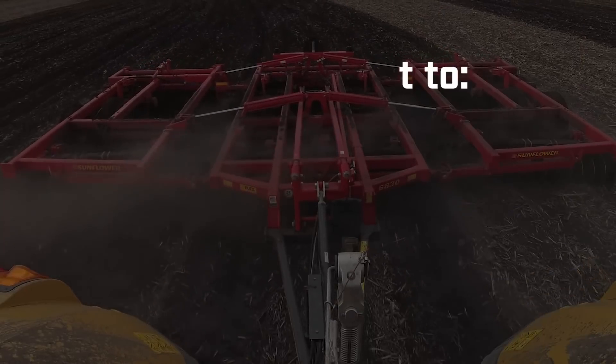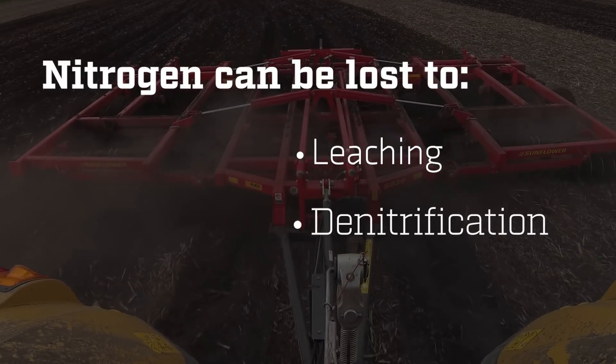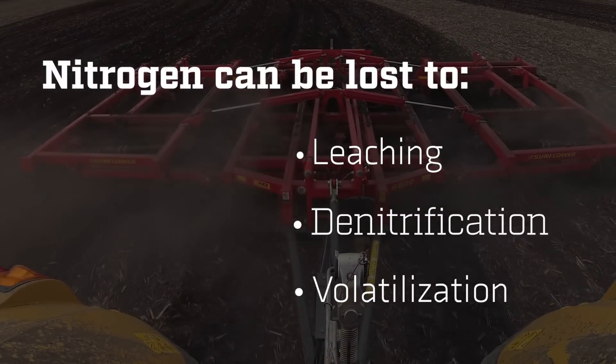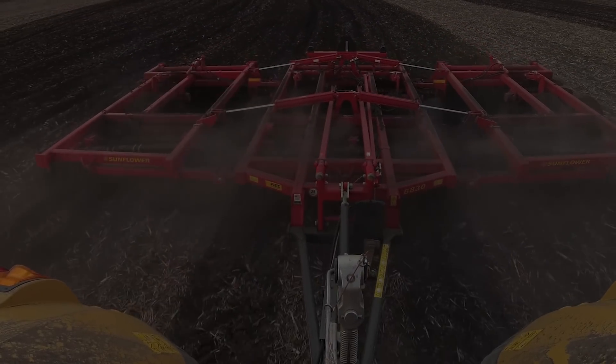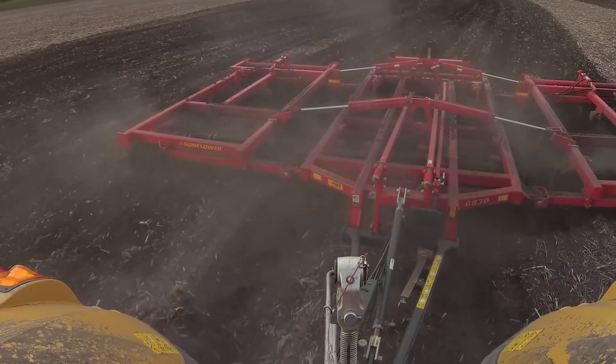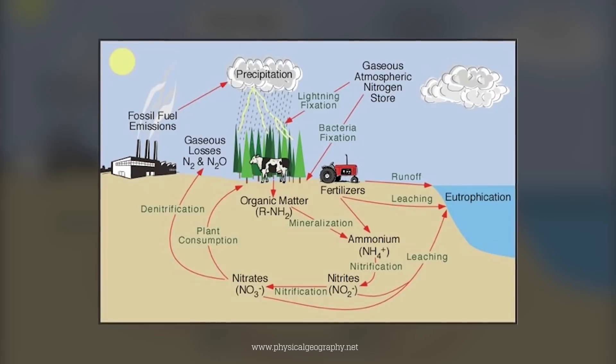Fall application of nitrogen, although it's somewhat simple, isn't always our best answer. We have to worry about leaching and denitrification — two things that can be detrimental to raising a crop. That's where I go back to: let's split apply. It mitigates that risk of putting it all down either in the fall or pre-plant.